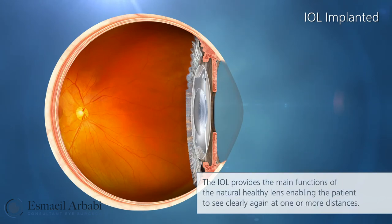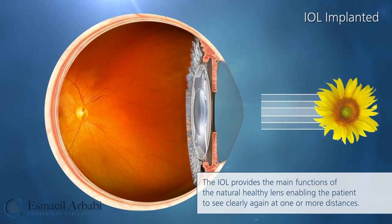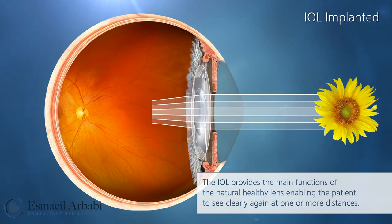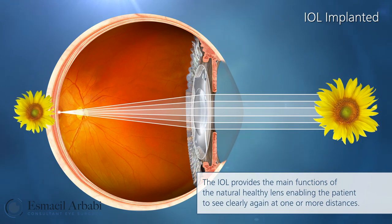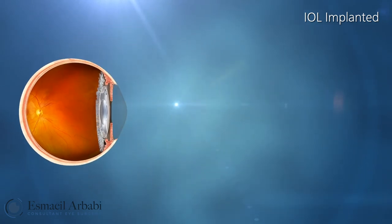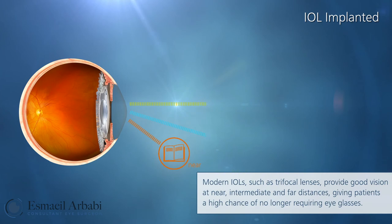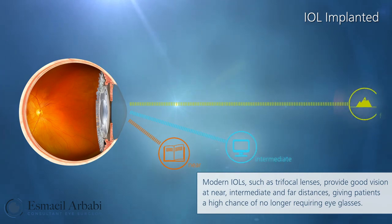The IOL provides the main functions of the natural healthy lens, enabling the patient to see clearly again at one or more distances. Modern IOLs such as trifocal lenses provide good vision at near, intermediate, and far distances, giving patients a high chance of no longer requiring eyeglasses.